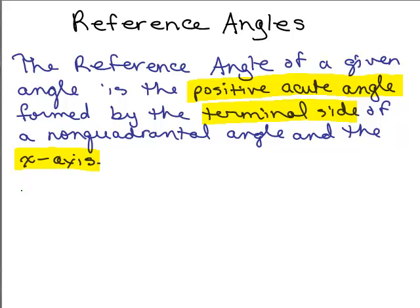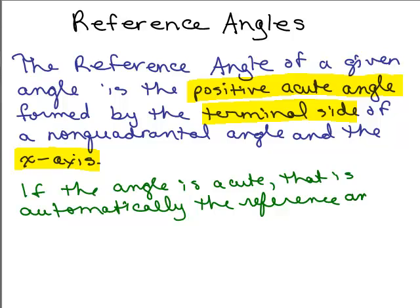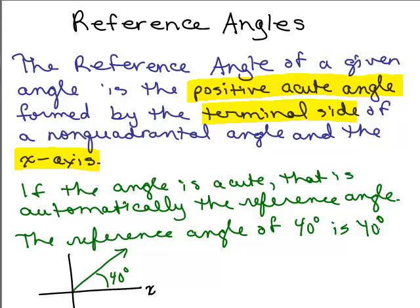If the angle is already acute, that's the answer. For instance, the reference angle of 40 degrees — if we take the definition and draw 40 degrees, we ask what angle does that make with the x-axis? It's 40 degrees still. So the reference angle of 40 degrees is 40 degrees. It usually doesn't make sense to ask for a reference angle for something that is already acute.